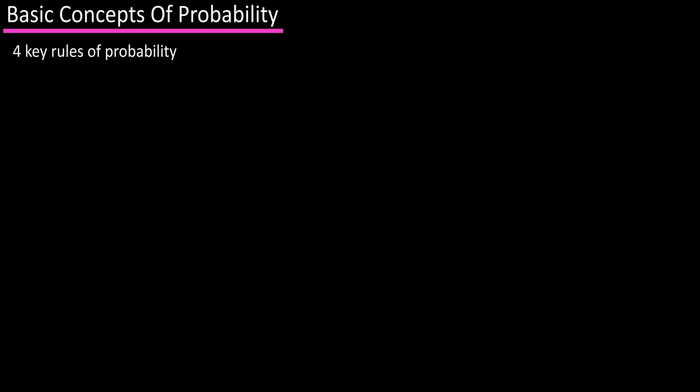And there are four key rules to probability. The first is that probability of an event is between 0 and 1, including 0 and 1. And this is written as 0 ≤ P(E) ≤ 1. And whatever the value of P is can be written as a fraction or decimal.